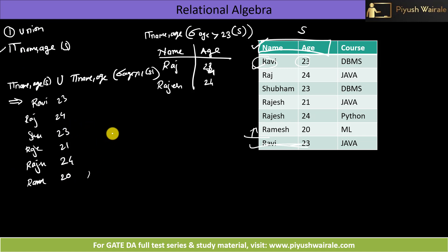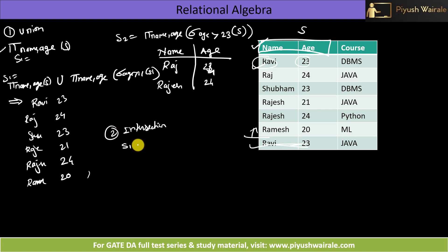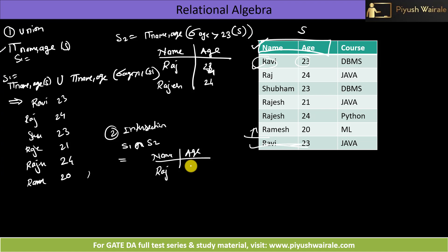For intersection — call the first result S1 and the second S2. S1 intersection S2 gives the common elements present in both sets. In this case, Raj 24 and Rajesh 24 are present in both sets. So the answer is Raj 24 and Rajesh 24.